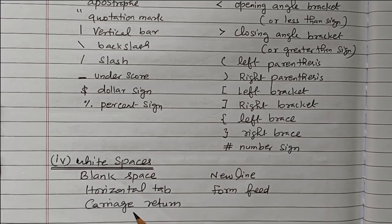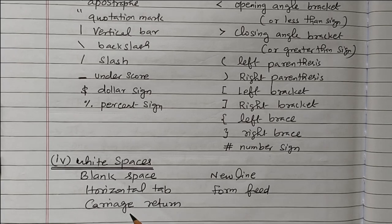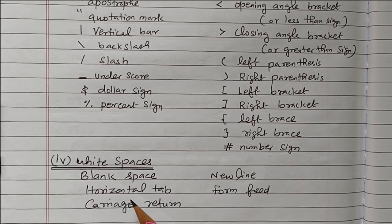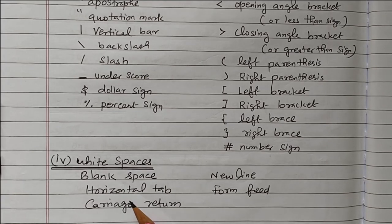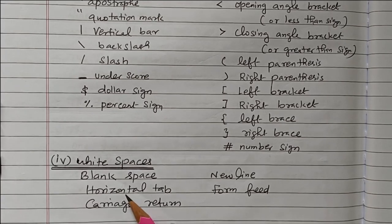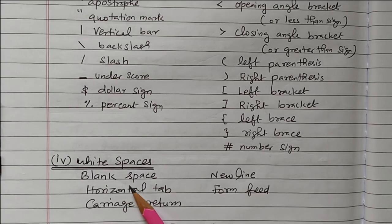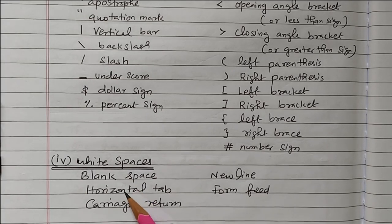So the character set is the set of characters defined for a given computer, and that set can be used for that given computer. Accordingly, the C program has a character set: the first one is letters — small letters or capital letters from A to Z; then the digits 0 to 9; then the special characters starting from comma, semicolon, colon, question mark, plus symbol, minus symbol, greater than, less than — all are coming under special characters.